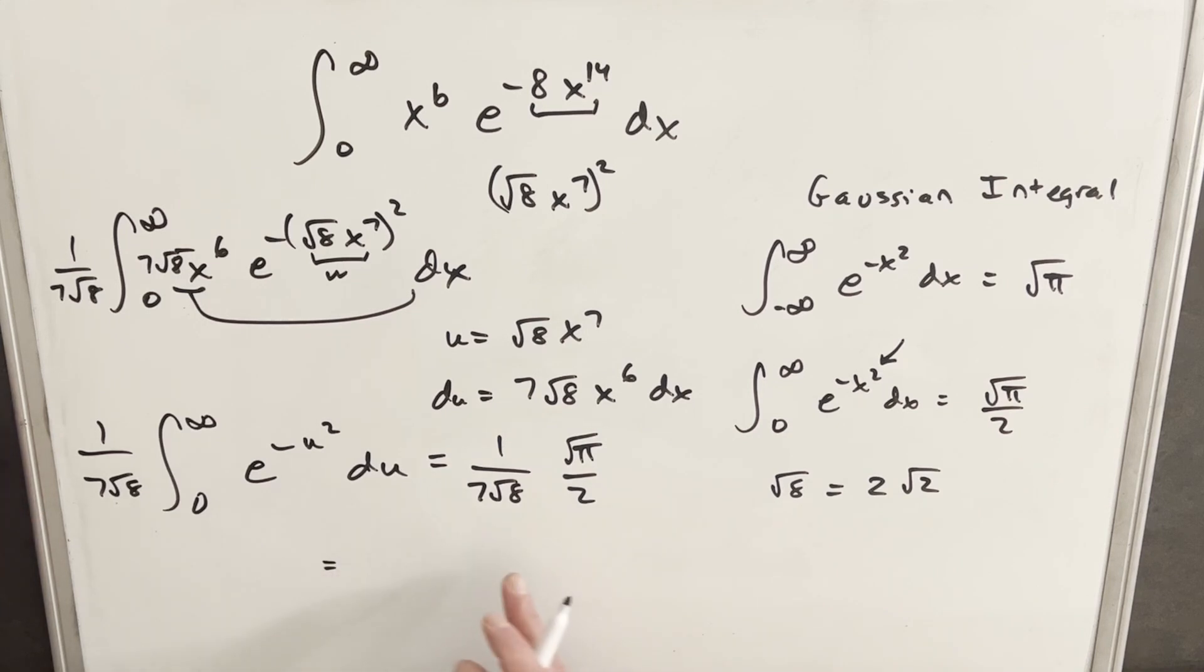And so then rewriting this for the final answer, we have 7 times 2, 14 times 2. I'm going to have 1 over 28 square root of pi, but we have this 2 here, so we'll have square root of pi over 2.